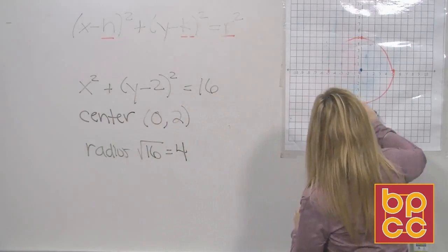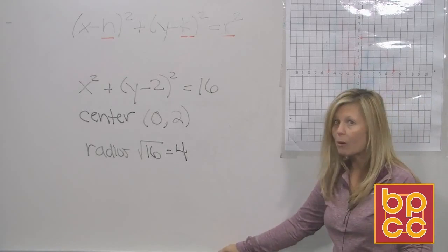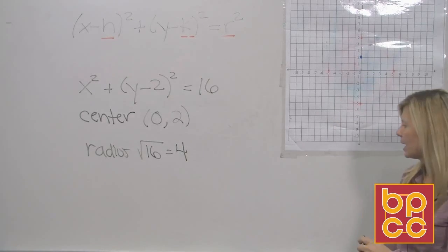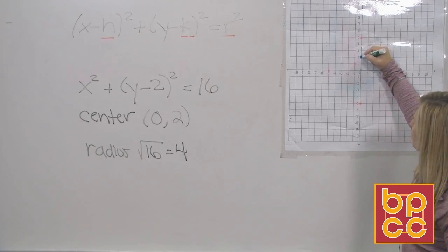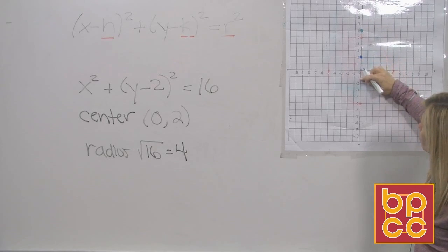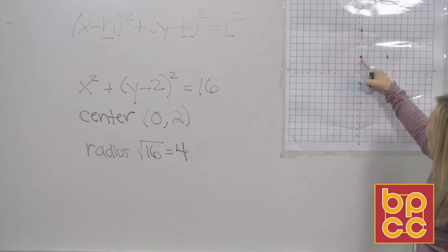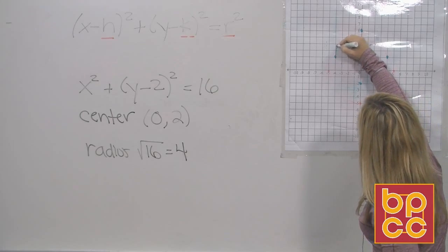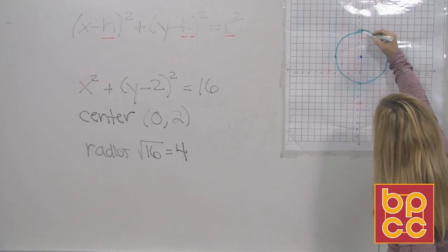Now that you have your two pieces of information — center (0, 2) and radius 4 — you can graph the circle. Plot the center first: zero, two is two up on the y-axis. Then move a radius of 4 from the center in each direction: up 4, down 4, right 4, and left 4. That gives you the four vertices. Connect them and there is your circle.